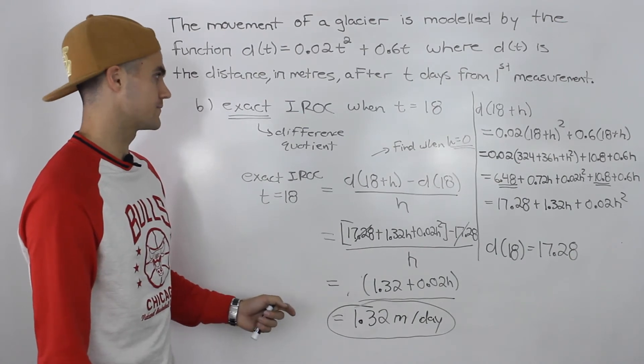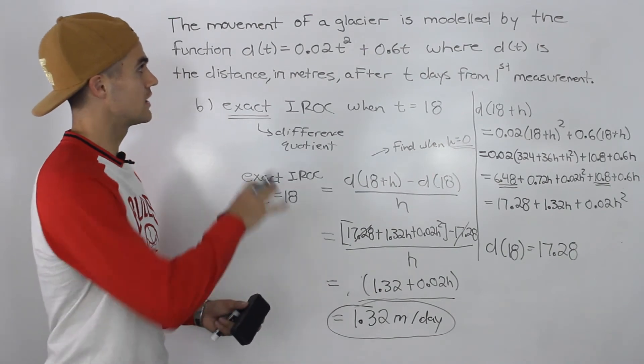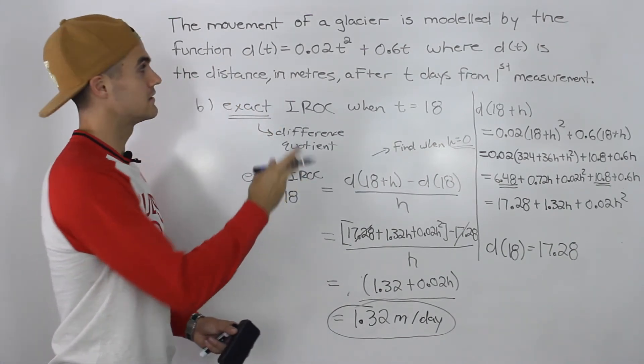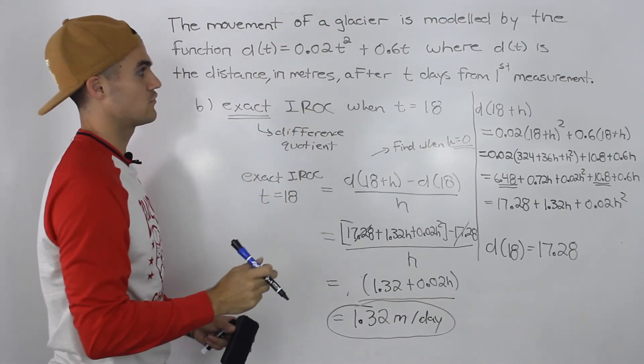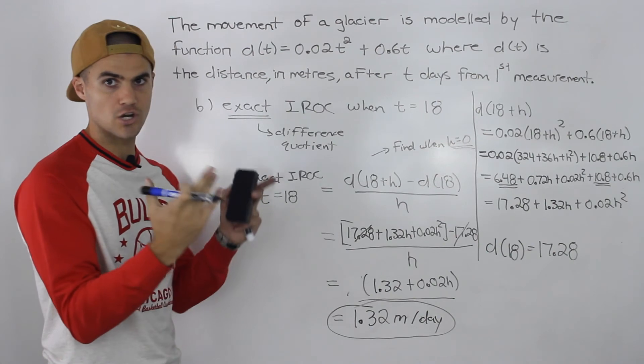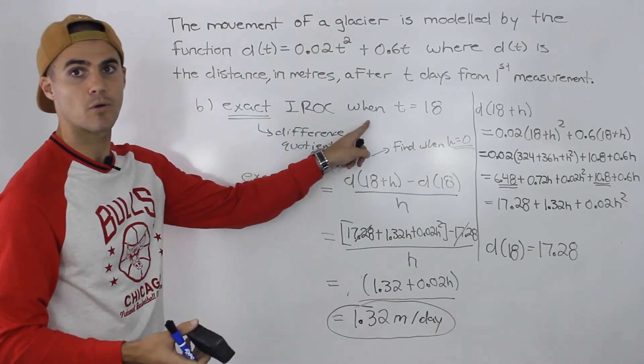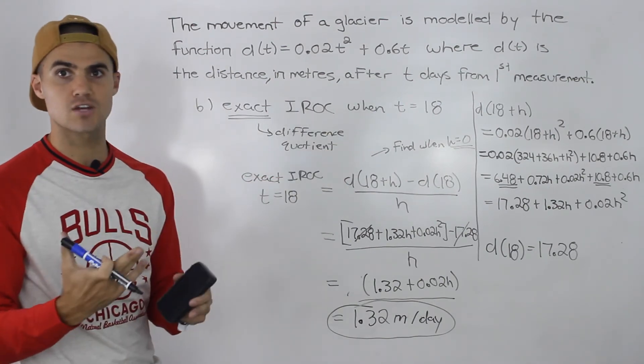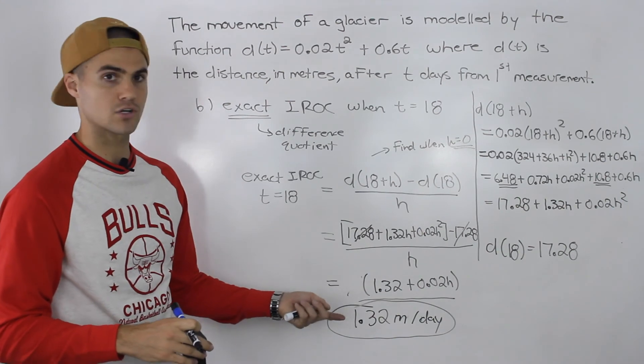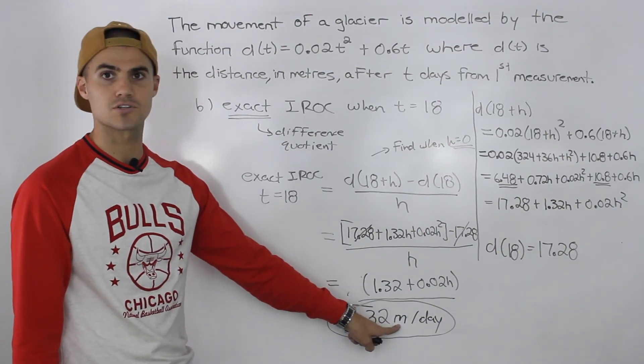Part c can be answered from that explanation. Basically, the rate of change in this situation is how fast the glacier is moving per day. Whether we're finding an average rate of change on an interval or an exact rate of change at a specific day like in part b, whatever rate of change we're finding always represents the movement of the glacier, or how fast the glacier is moving per day, always in meters per day.